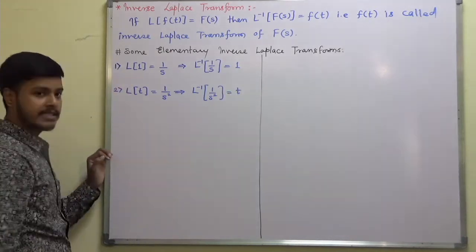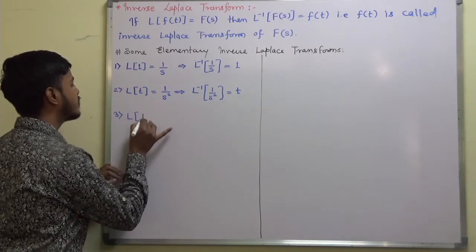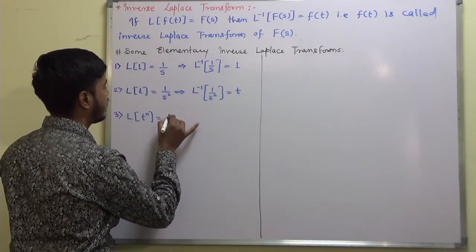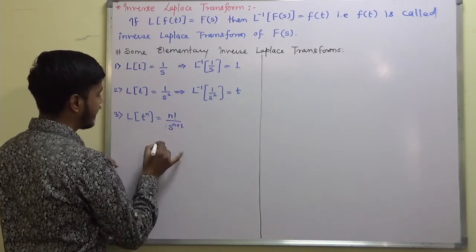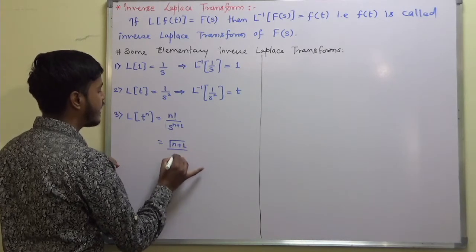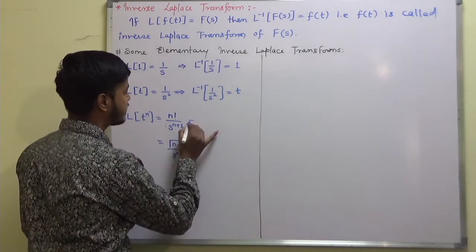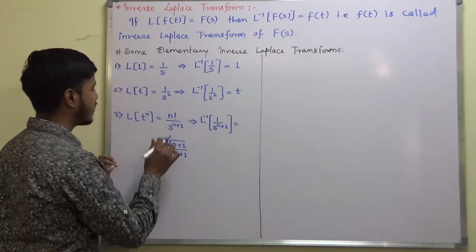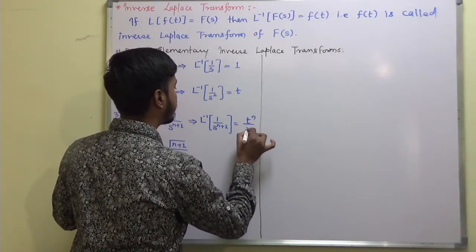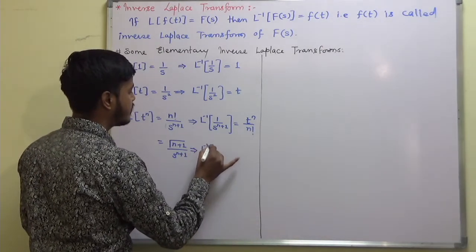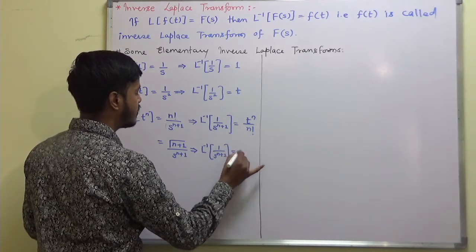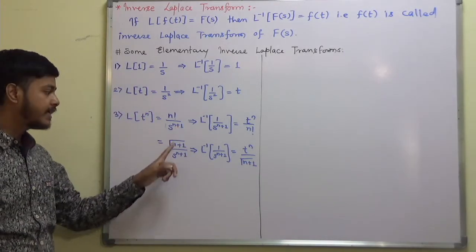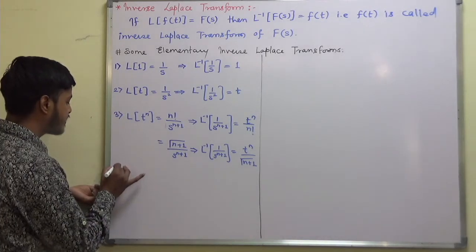The third formula: the Laplace transform of t to the power n has two forms — n factorial upon s to the power n+1, and gamma(n+1) upon s to the power n+1. So L inverse of 1/s^(n+1) is t^n / n!, and L inverse of 1/s^(n+1) is t^n / gamma(n+1). The first result is for integers and the second is for fractions.